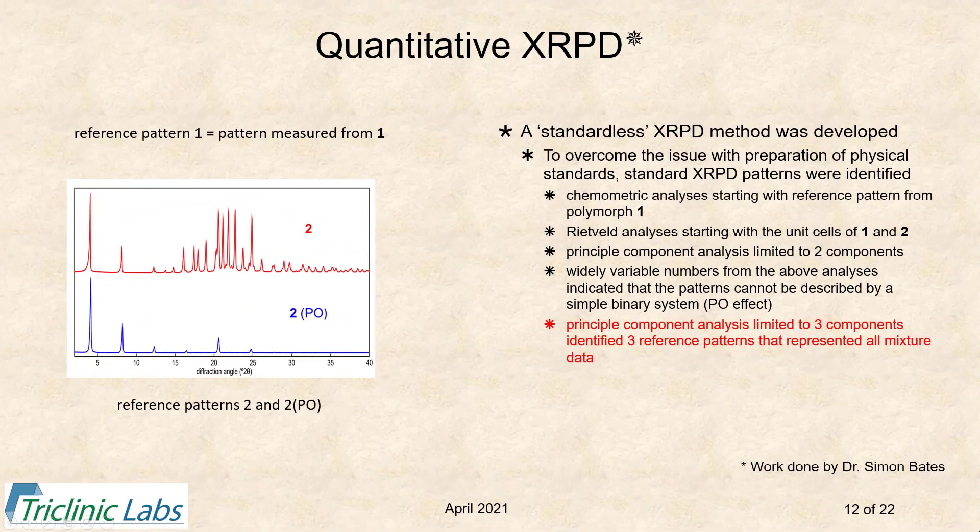The method ultimately developed we call a standardless X-ray powder diffraction method, originally developed to overcome the limitations of preparing physical standards. Instead, we use statistical methods to identify standards. We measured X-ray data from a variety of API samples with different concentrations of polymorph one and two, then performed PCA analysis of the pretreated data. When the data was treated as binary—looking for two reference patterns—they could not be found, meaning no pair of patterns could recreate the measured patterns.